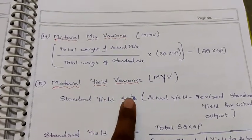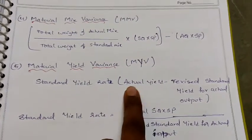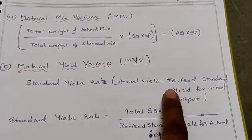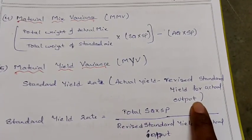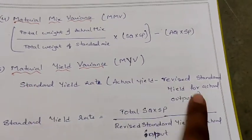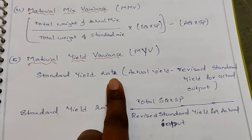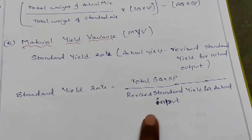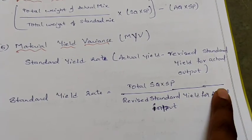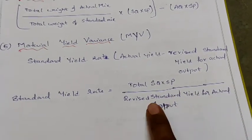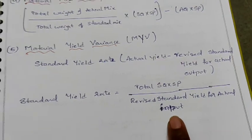Coming to material yield variance, the formula is: Standard Yield Rate × (Actual Yield − Revised Standard Yield for Actual Output). For finding the standard yield rate, the formula is: Total of (SQ × SP) divided by Revised Standard Yield for Actual Input.